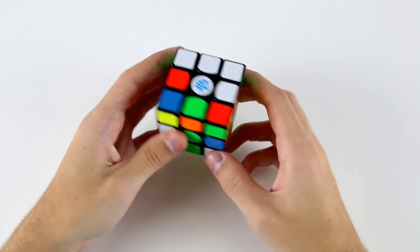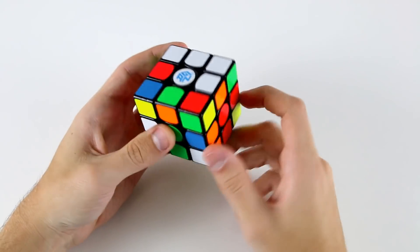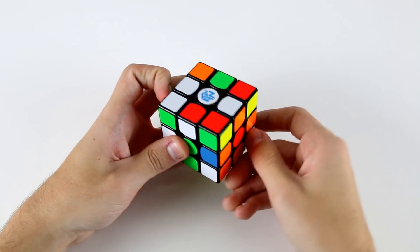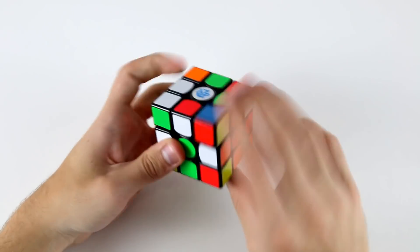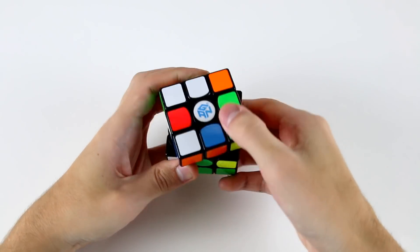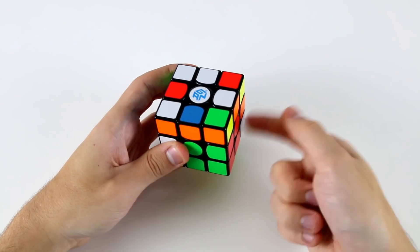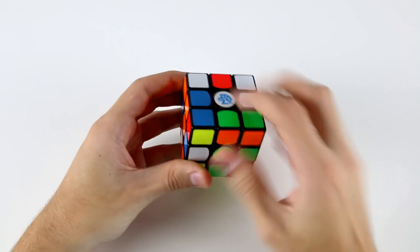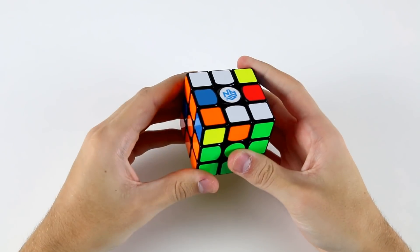Then the first F2L pair that I see is this corner and this edge here, which can easily be inserted into this front slot, r' u' r2u r' and as I was doing that I noticed this edge actually went into this back slot and the corner remained up here. Well the corner came to this position so I can go r' u r to connect these two and then insert those.